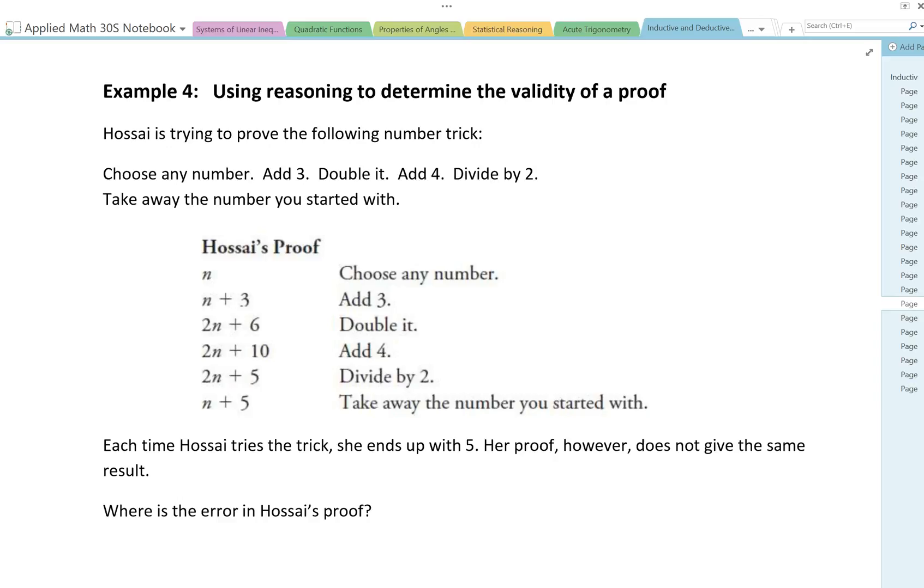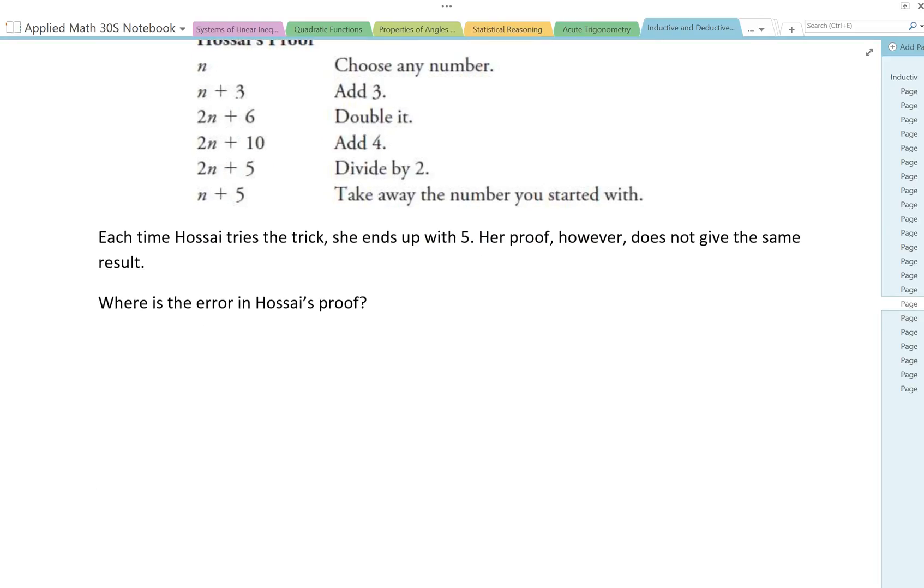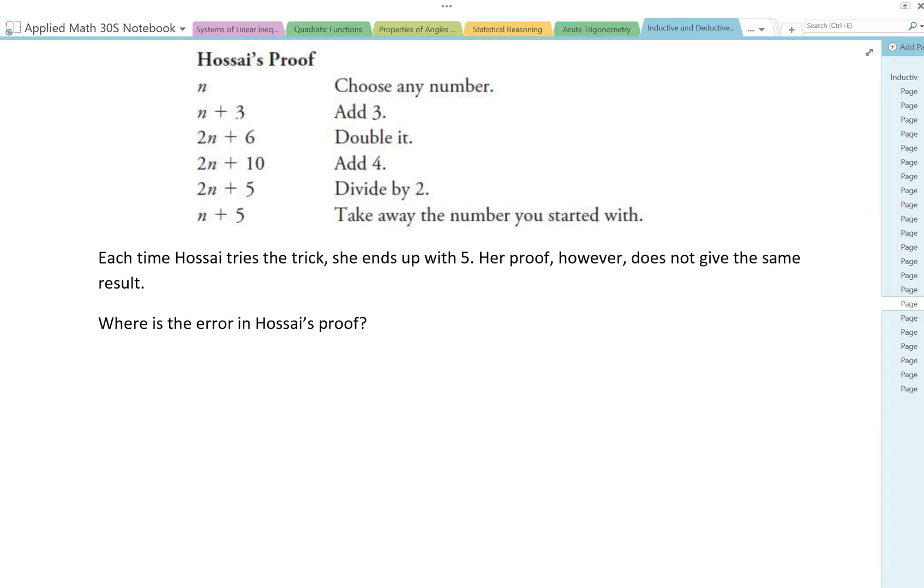Let's take a look at the last example in our notes here. Hossa is trying to prove the following number trick. Choose any number, add 3, double it, add 4, divide by 2, take away the number you started with. Each time Hossa tries the trick, she ends up with 5. Her proof, however, does not give the same result. Where is the error in Hossa's proof? See if you can figure out where the mistake is.